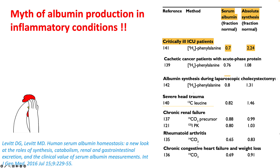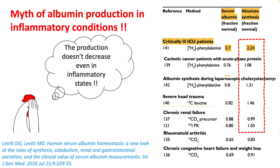This brings us to the myth of albumin production in inflammatory conditions, where it is normally said to be a negative acute-phase reactant. Looking at this list of inflammatory conditions, the rate of albumin synthesis is actually increased in most cases. In critically ill patients, where you will always see hypoalbuminemia, the rate of synthesis is actually much higher. The only condition studied that had a reduced rate of synthesis in inflammatory conditions was rheumatoid arthritis.